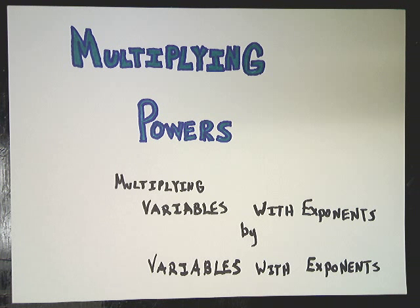In this video I'm going to talk about multiplying powers. Essentially, the idea is if you have a number with a variable, and then you have another number with a variable—that number being a coefficient of course—they both have exponents.